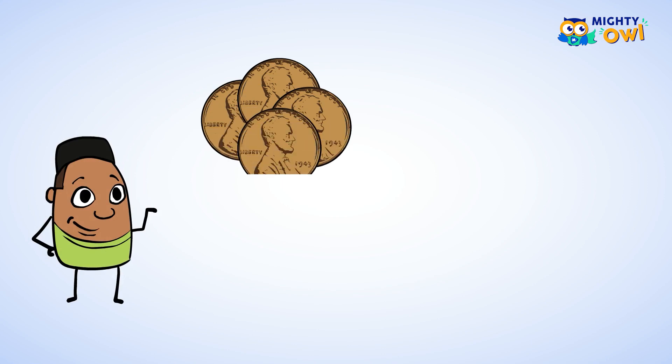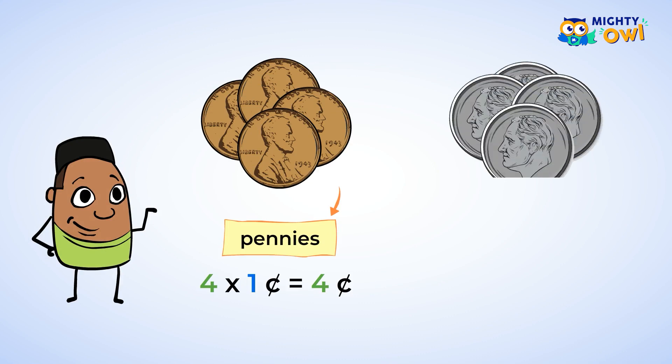Imagine that you found four pennies in your pocket. Well that means you have four cents. Now pretend those pennies magically turned into dimes. Then you'd have forty cents. Much better.